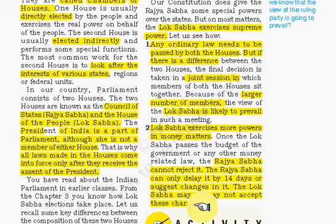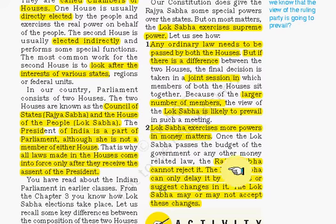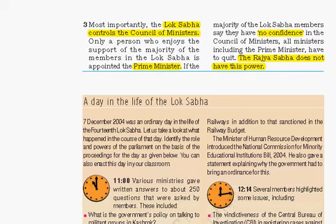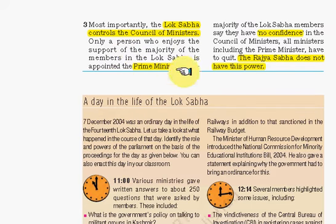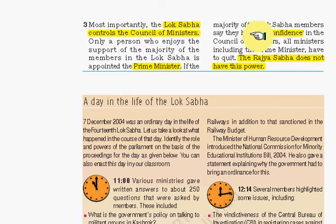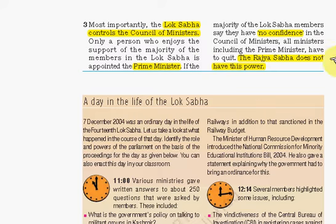Lok Sabha may or may not accept the changes suggested by Rajya Sabha. For example, the budget bill is only passed by Lok Sabha, and Rajya Sabha can only suggest amendments — but it is not necessary that Lok Sabha adopts these changes. Most importantly, Lok Sabha controls the Council of Ministers, which takes all major policy decisions headed by the prime minister. If there is a dispute, Lok Sabha members can express no confidence in the Council of Ministers, which can cause the whole government to dissolve — a power that Rajya Sabha members do not have.